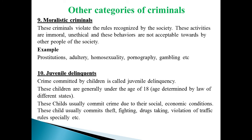The ninth category is moralistic criminals — those involved in activities against the morality of society, which are immoral, unethical, and unacceptable. These criminals violate rules recognized by society, and their behaviors are not acceptable to other people. Examples include those operating in prostitution, adultery, homosexuality, pornography, and gambling.